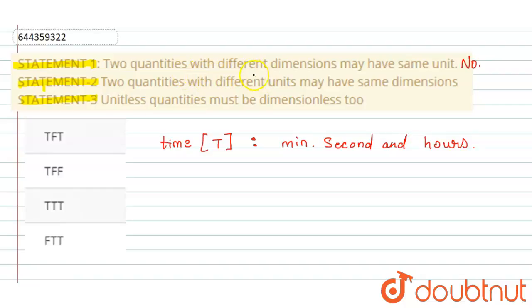So two quantities with different dimensions may have the same unit - this statement is false. When we talk about statement 2, it says two quantities with different units may have the same dimension.